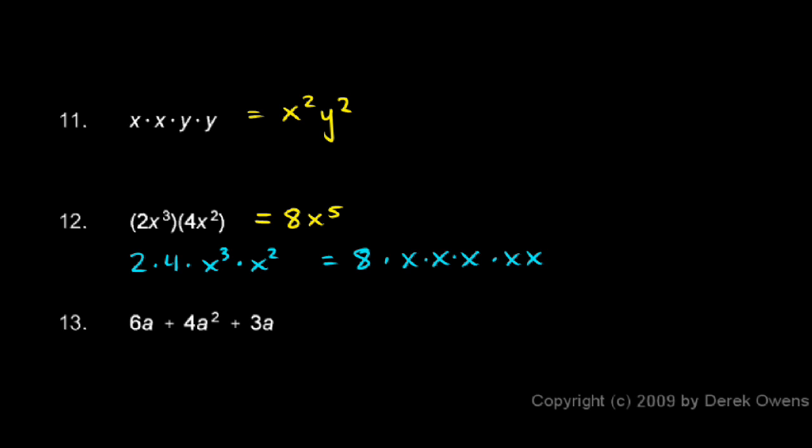Now number 13, 6a + 4a² + 3a. This is an exercise in combining like terms. All of these terms, there are three terms here, they all have a's in them, but they're not all the same. This is an a term, this is an a² term, and this is an a term. The 6a and the 3a are both a terms. They have exactly the same variable part. So those two terms can be combined. That can't be combined with the 4a². So we'll combine the 6a and the 3a, and we get a 9a, and then we still have the 4a². So it's 9a + 4a², and that's the answer.